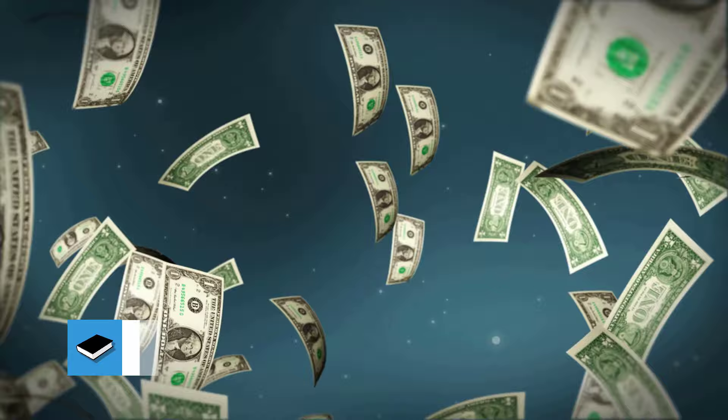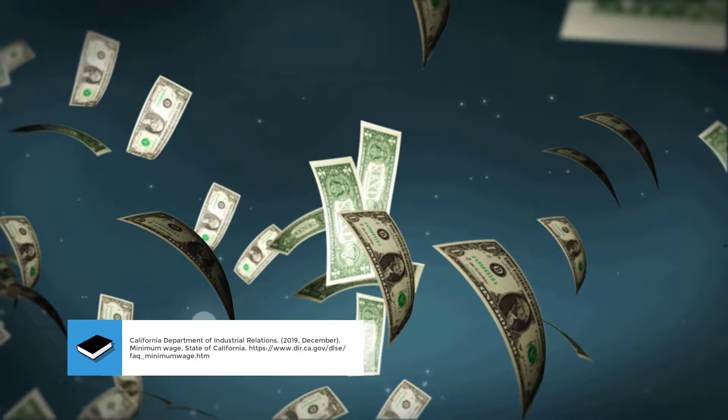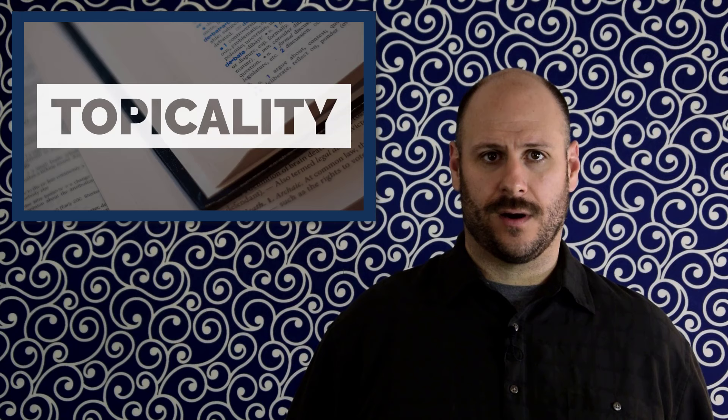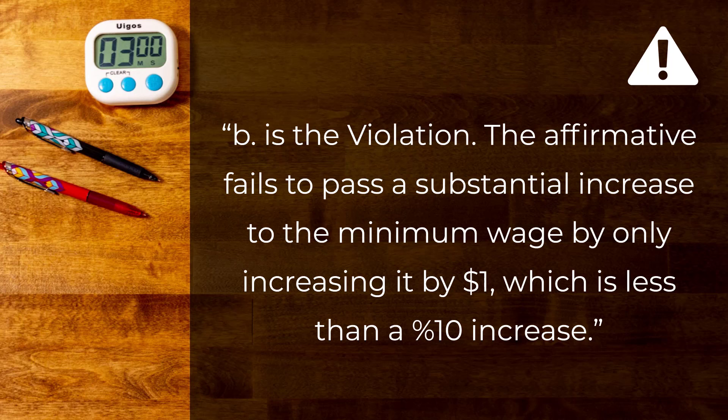Using our interpretation above to be topical, the affirmative would need to increase the minimum wage by at least $6 an hour to hit the 50% increase of $18 an hour. To explain the violation here, you might say something like, B is the violation. The affirmative fails to pass a substantial increase to the minimum wage by only increasing it by $1, which is less than a 10% increase.